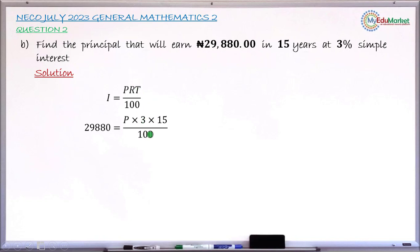Next, cross multiply. P times 3 times 15 equals 29,880. By the left-hand side, P times 3 times 15 equals 29,880 multiplied by 100.